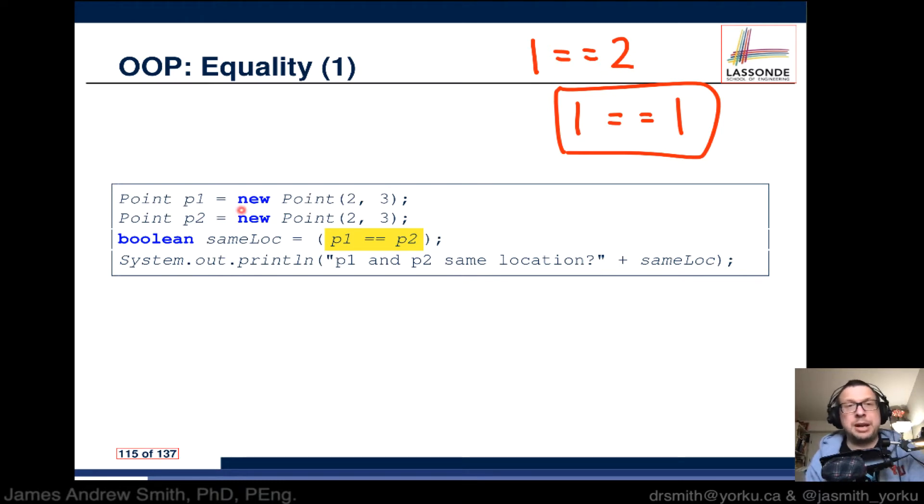Now what happens when we do it like this: we go Point p1 of type Point is an object Point with initial x and y coordinates of two and three, and we have another point p2 two and three. If we ask if p1 and p2 have the same location, what's going to happen?